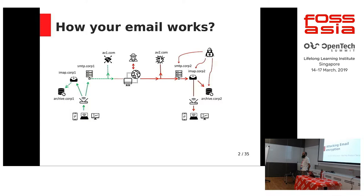When you send an email you start by typing it on your device — mobile, handheld, laptop, or desktop. When you send it out, the data goes via your local router or wireless device, and we assume you have control of that device. If you are working at a company, the network administrator probably has control. So this is green. Then it goes to the SMTP server controlled by the company — Corp 1 — which is also green, meaning all of these things are trusted.